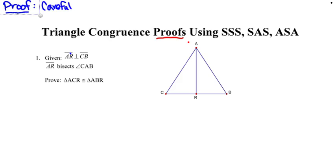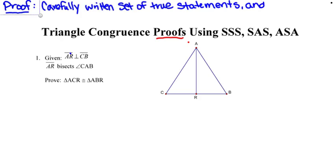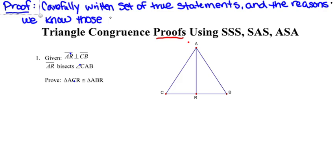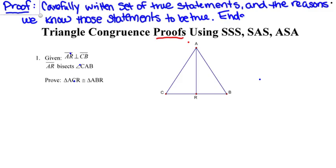So it's a carefully written set of true statements along with the reasons we know those statements to be true. The proof will always end or conclude with the statement that you're trying to prove. Now that we know what it is and what it's all about, let's go ahead and jump right in.